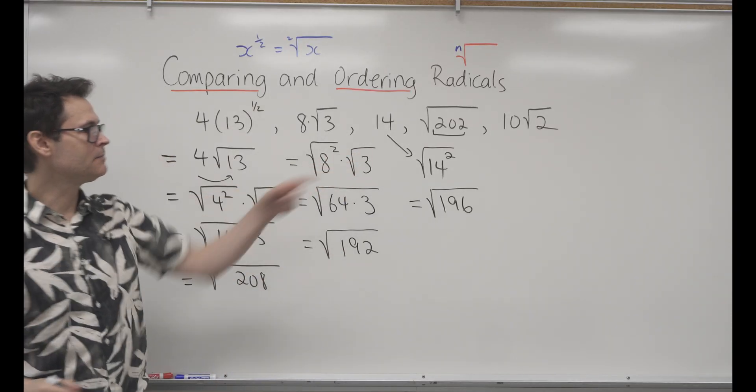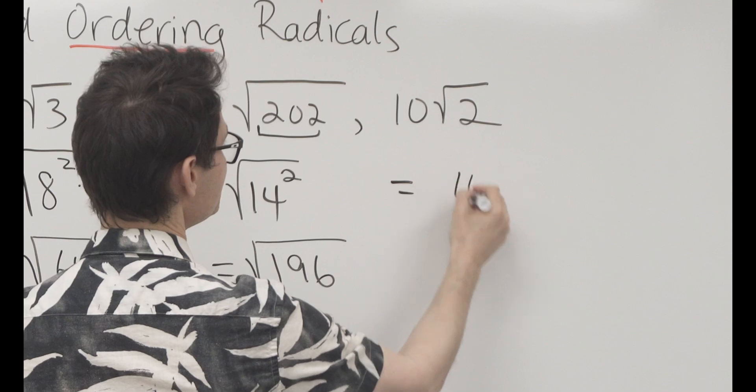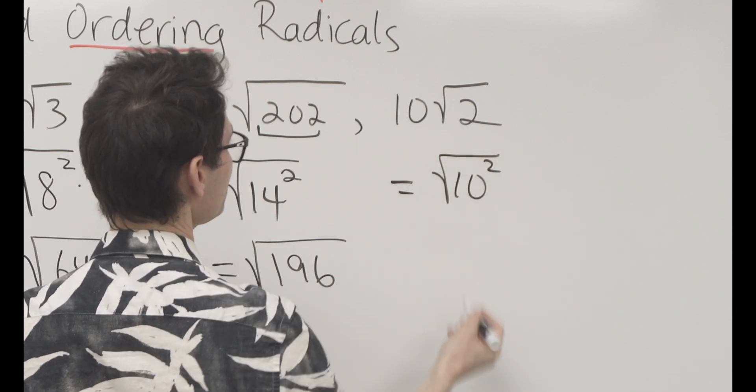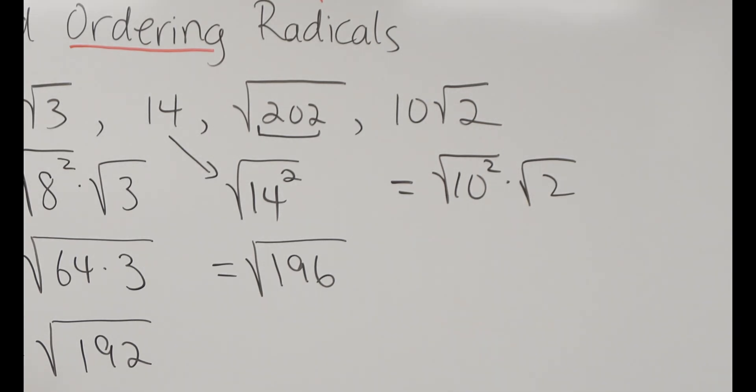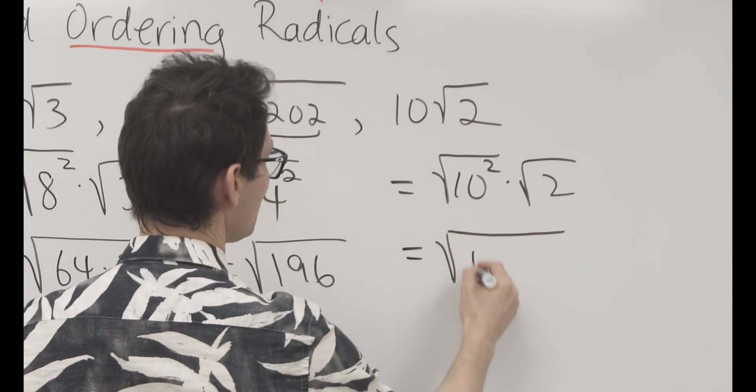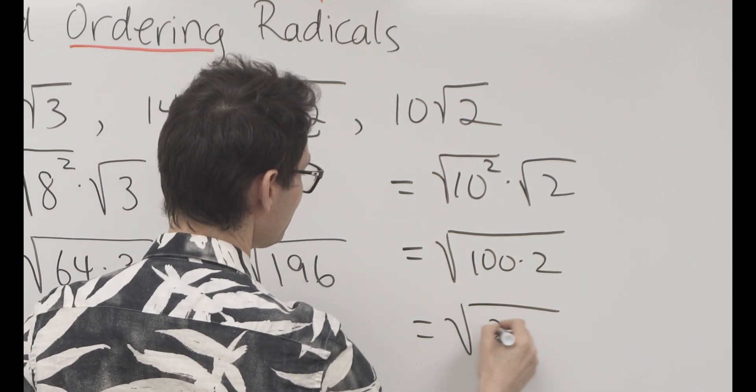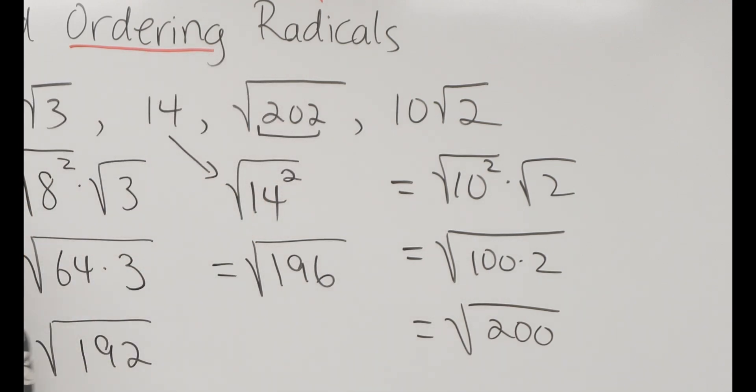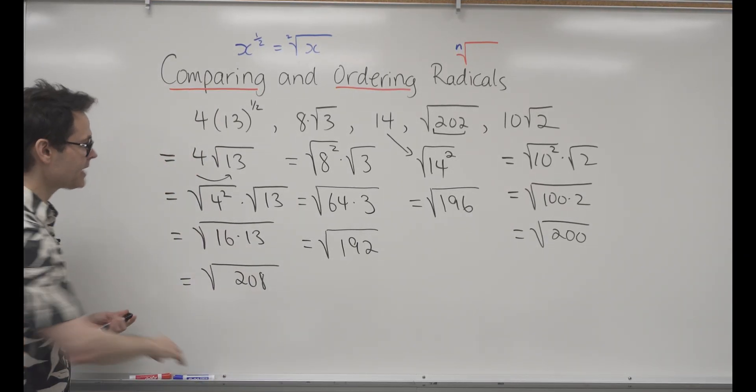The last one is 10 root 2. So 10 is 10 squared, square rooted, times root 2. And now I can combine them together. That's the square root of 100 times 2, or the square root of 200. And now I've got everything exactly as I want it.